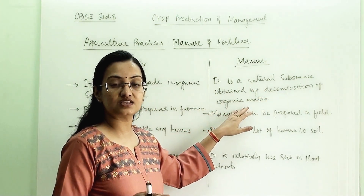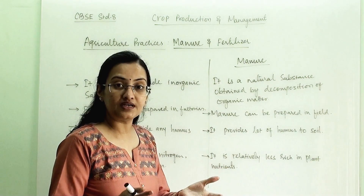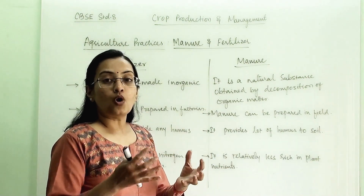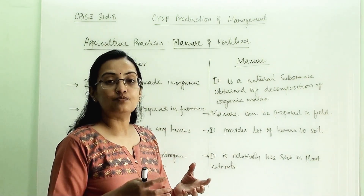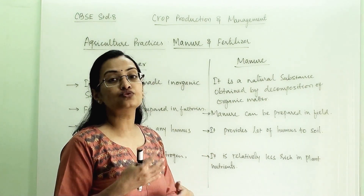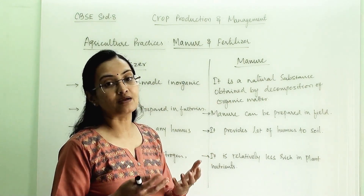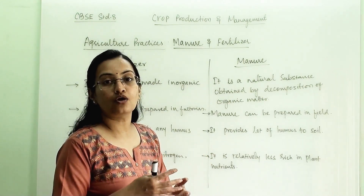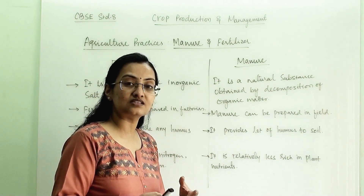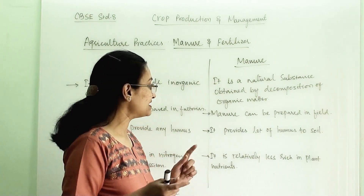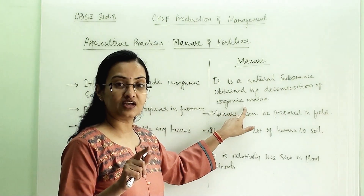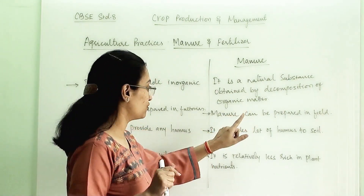Earlier we discussed that a farmer will dig a pit and drop all the animal waste and dead plant leaves into that pit, allowing them to decompose by bacteria or microorganisms. They will decompose this matter and what we get is this decomposed organic matter, which is called manure.